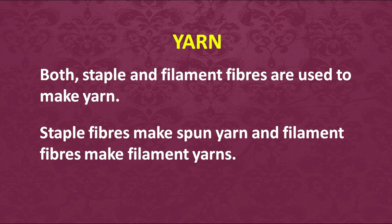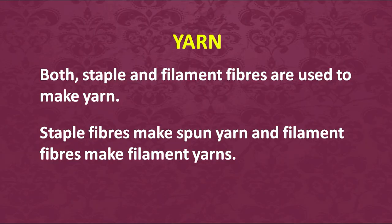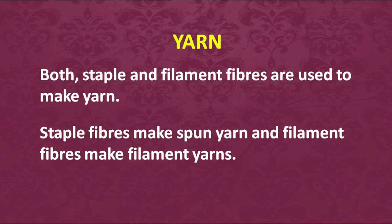Similarly with silk — some silks are very smooth, some have a coarse surface, showing that various twisting and treatments have been incorporated. Staple fibers are cleaned and twisted to form yarn, while filament fibers are twisted together and treated to make filament yarn. Staple fibers make spun yarn, and filament fibers make filament yarn — the name of the fiber often identifies the yarn.